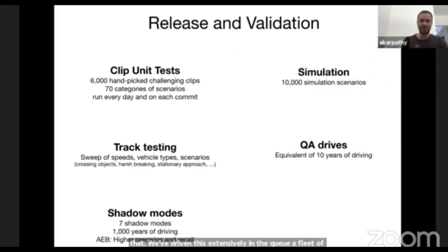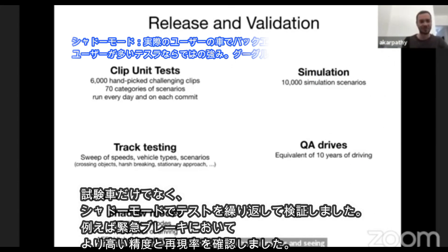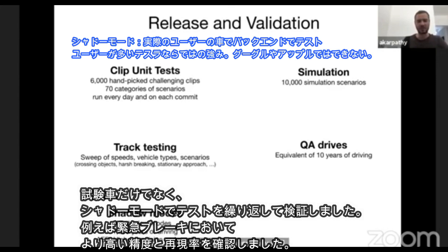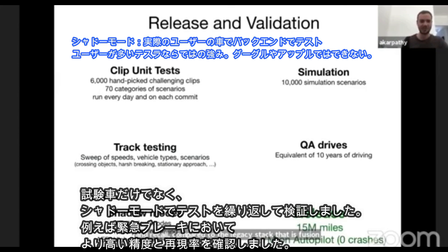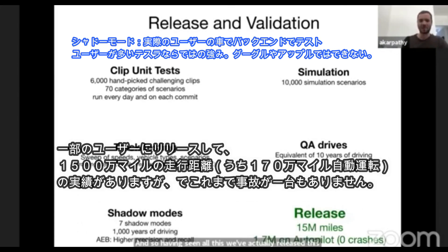We've also deployed this in shadow mode and seen that this stack performs fairly well. For example, for automatic emergency braking, we actually see higher precision and recall compared to the legacy fusion stack. Having seen all this, we've released this and accumulated about 15 million miles so far, with 1.7 million of those on autopilot.